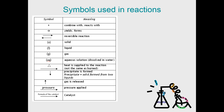Here are the symbols used in reactions. A plus symbol means you're adding things together. The arrow in the middle of your chemical equation separates before and after the reaction — it represents the words 'yields,' 'forms,' or 'produces.' A double arrow means a reversible reaction, which can go forward as well as backward. S, L, G in parentheses represent solid, liquid, and gas. AQ in parentheses means aqueous — for example, NaCl(aq) means salt dissolved in water.